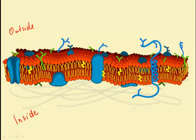The cell membrane can also control the movement of materials into and out of the cell. It can allow certain materials to pass right through it, prevent certain materials from passing through, and control the rate at which certain materials pass through it.